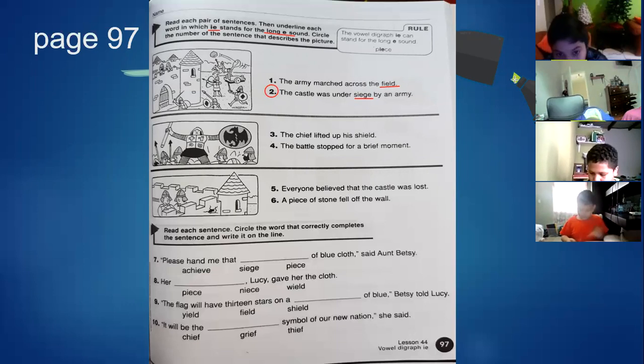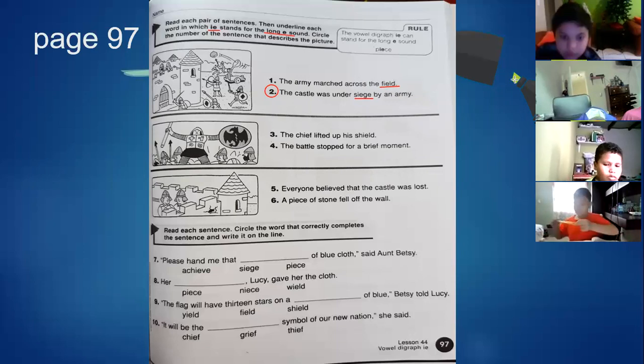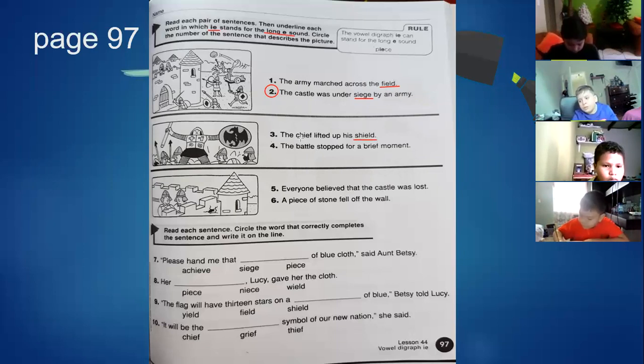First one. The army. So we have to look for these vowel pair, but we are looking for long E. Field. So yes. We have to underline this. When the army marched across the field. The castle was under siege by an army. Siege.